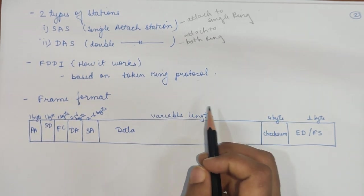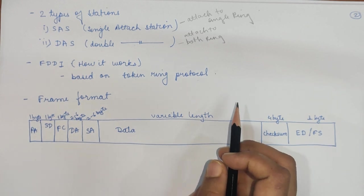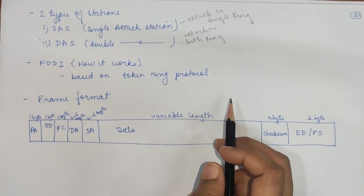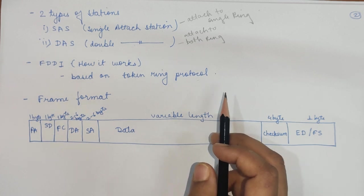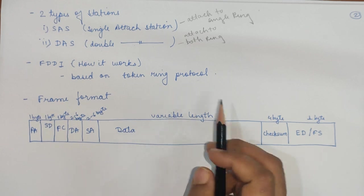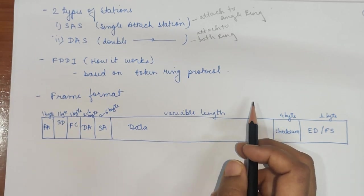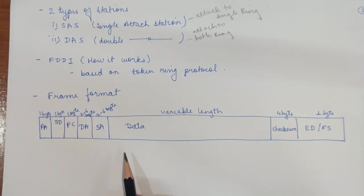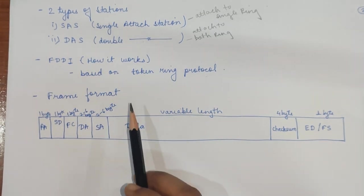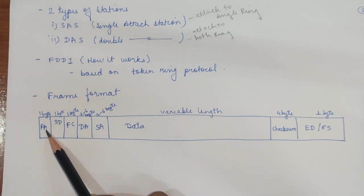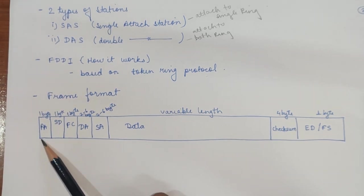Once the empty frame returns to the sender, the sender checks whether the frame is empty. If it is empty, the sender takes it as an acknowledgement that the data has been received at the destination. This is the way the token ring works, and FDDI works similarly. This is the basic frame format for FDDI.